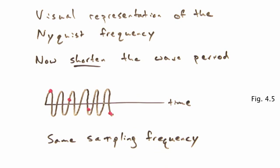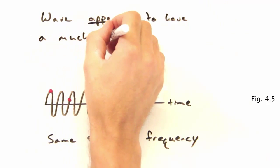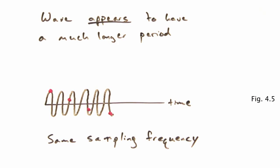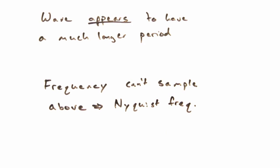You wouldn't be able to sample as much of the wave and would probably not get the correct information on it. Indeed, and the frequency that you can't sample above, because you'd get something wrong, is the Nyquist frequency.